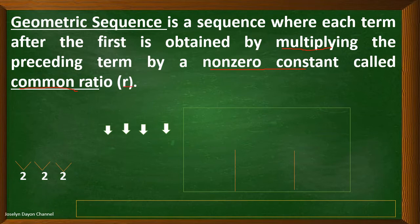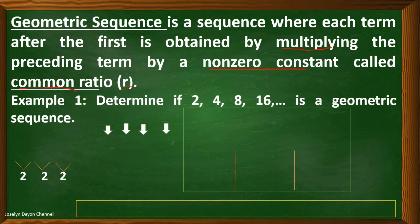Now, let's have an example. Determine if 2, 4, 8, 16 is a geometric sequence. How will we know that the sequence is geometric? Very easy! Just check the ratio between two consecutive terms.